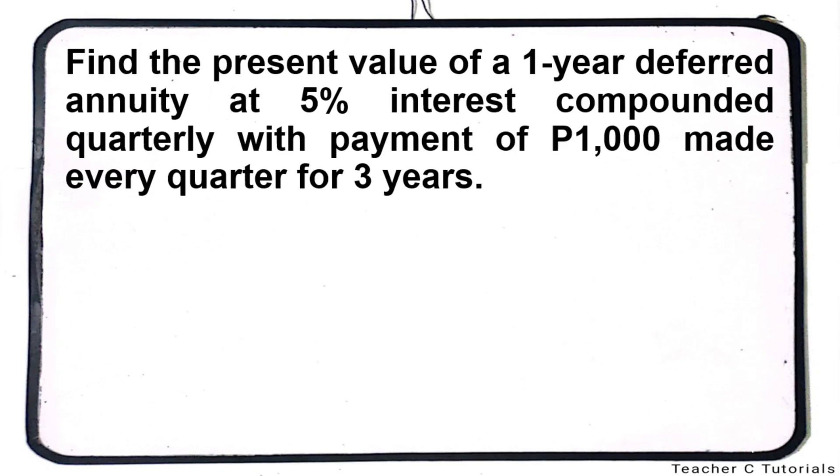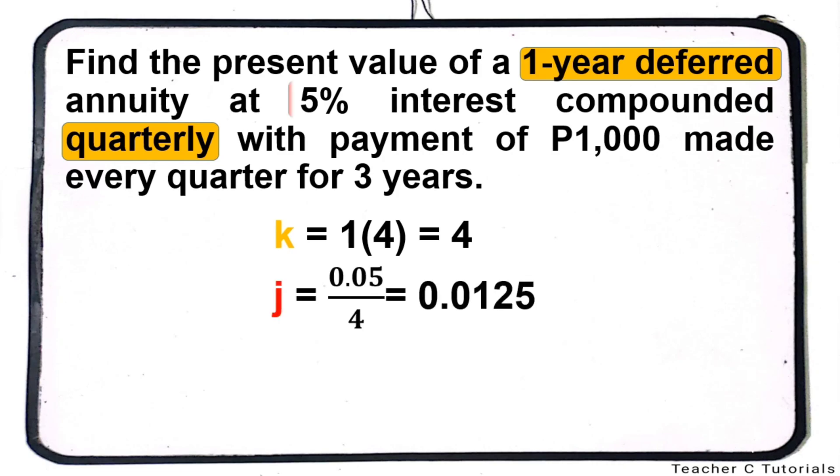First thing to do is to identify the givens. Let's start with K or the number of conversion periods in the deferral. The annuity is deferred by 1 year and the compounding period is quarterly which means 4 times a year. So 1 year times 4 for quarterly is 4. Next, let's identify the J or the interest rate per period. The interest rate is 5%, convert to decimal is 0.05, divide it by 4 because it is compounded quarterly. J is equal to 0.0125.